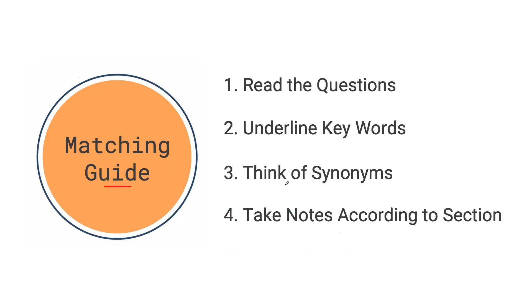Here's our guide — this is what we will be following in our step-by-step example. First, we're going to read the questions or statements that we'll have to match to our options, and as we do this we should be underlining our key words. Reading the questions and underlining keywords should be done together. You'll have about 20 seconds to read the information and underline before the listening prompt is played, so I would suggest that you pair steps one and two up. With time and practice, it will be easier to read and underline at the same time. In the test, you should combine these two steps.